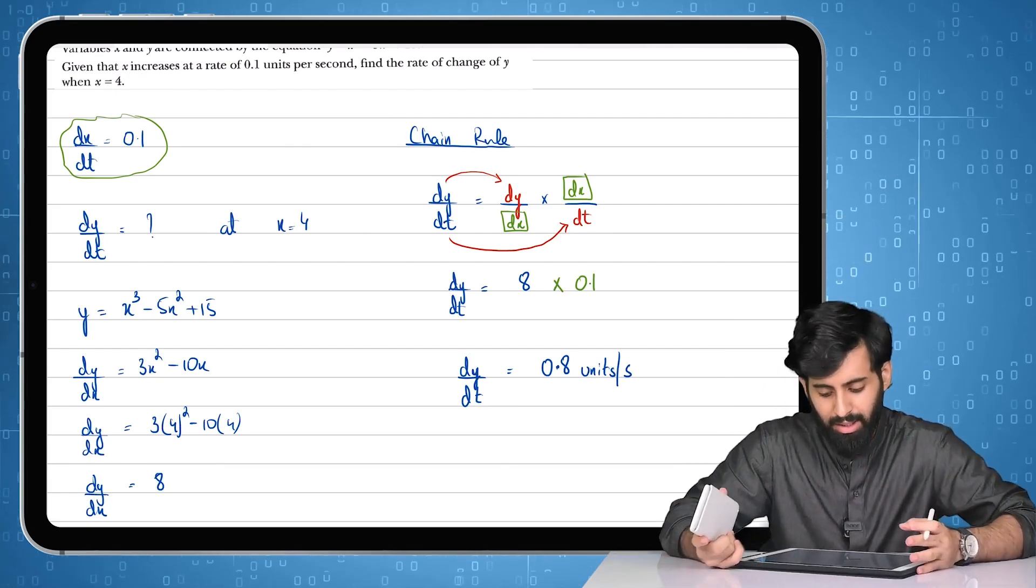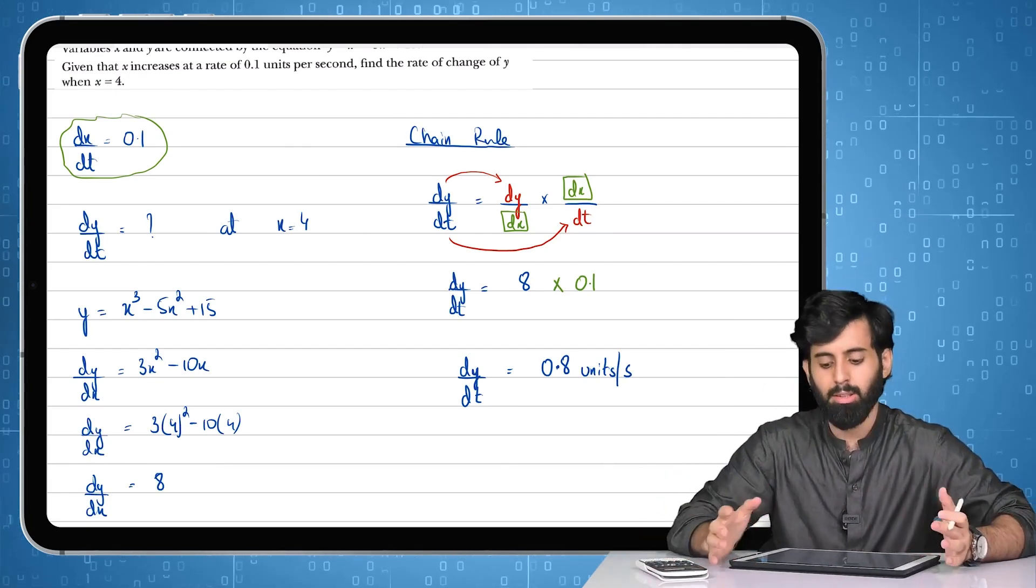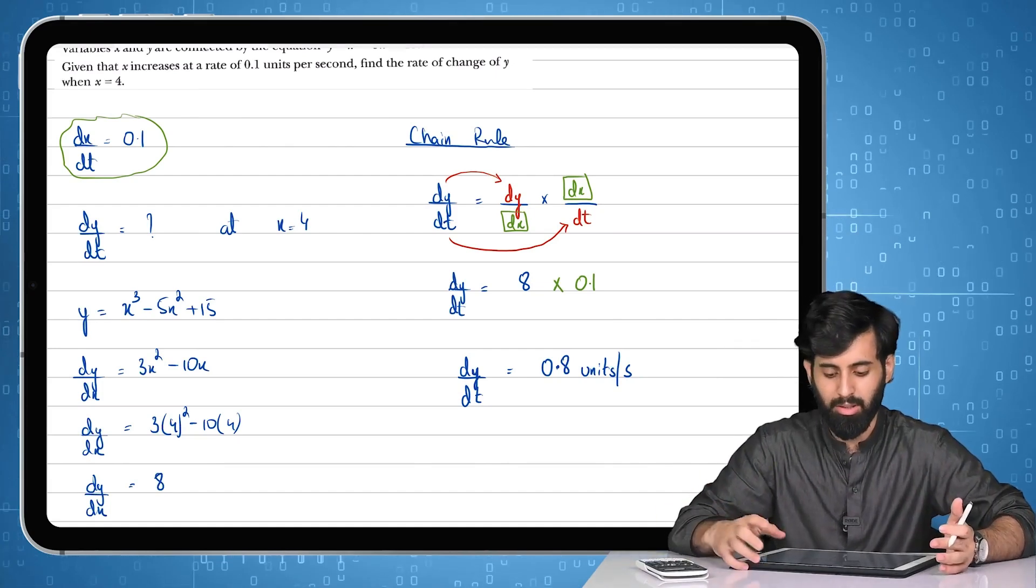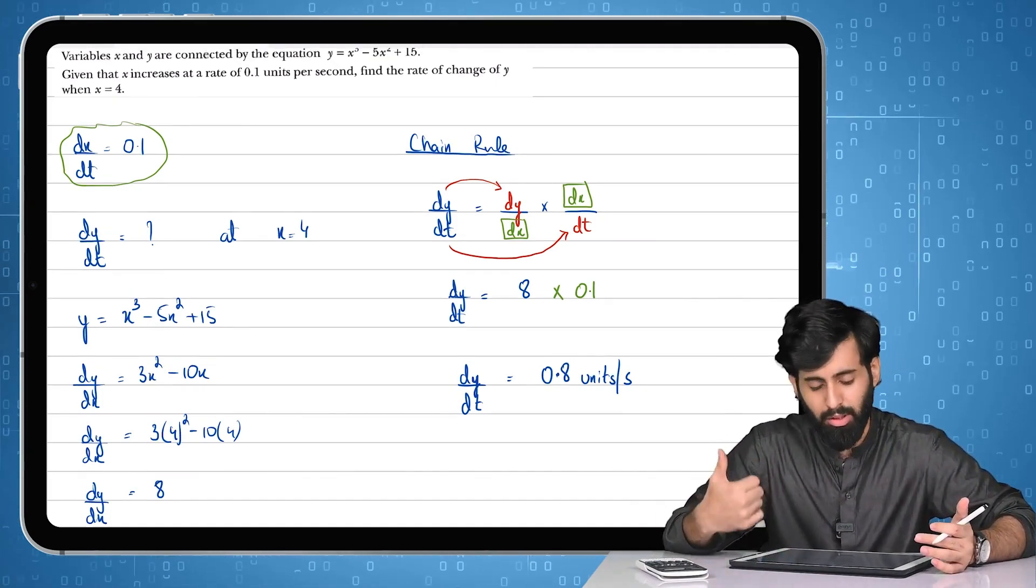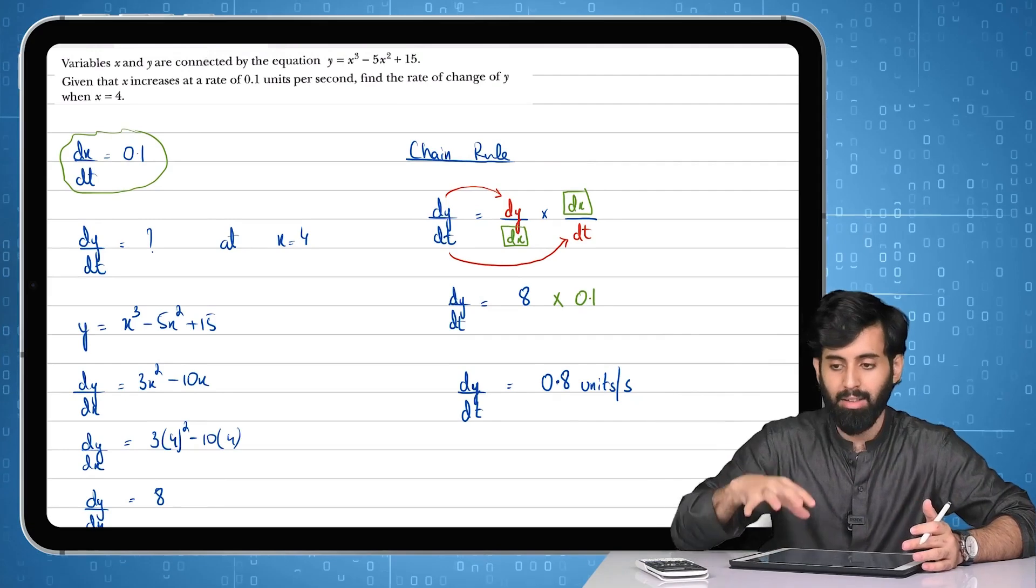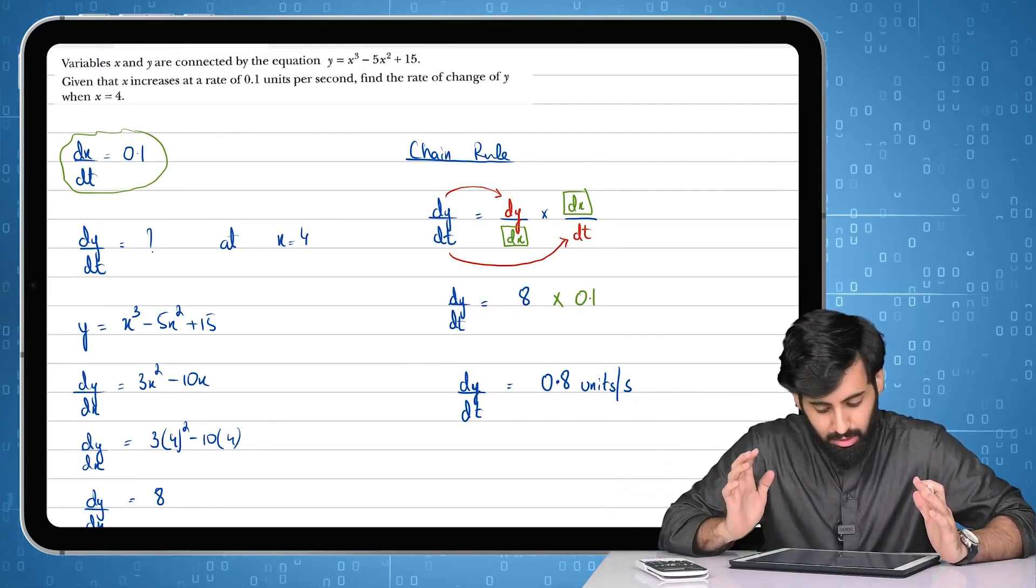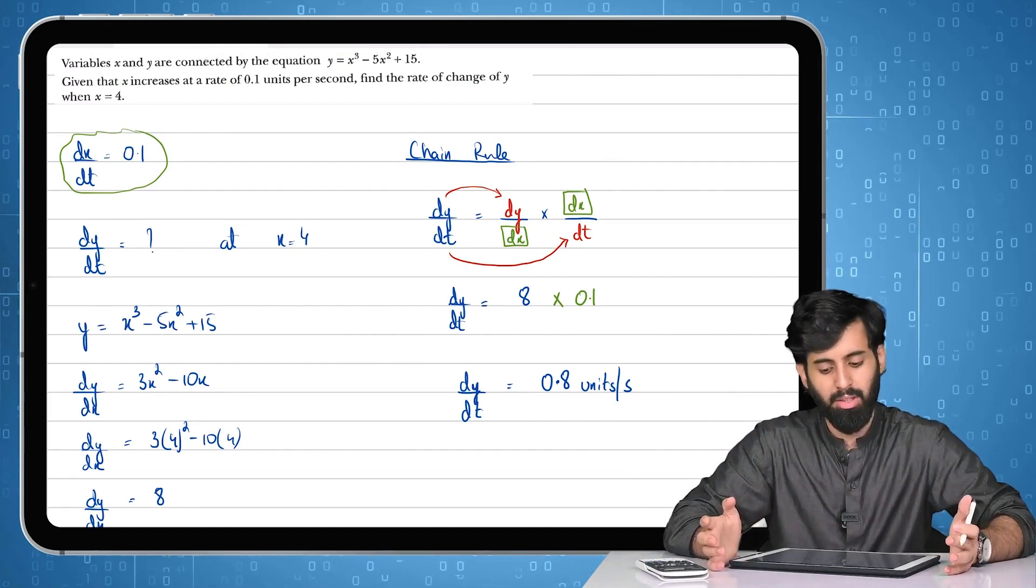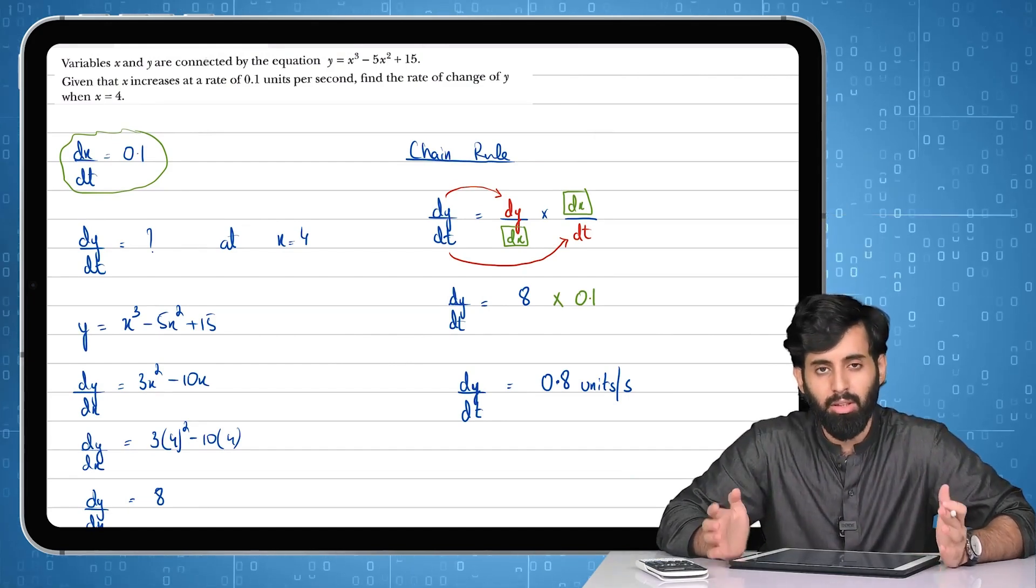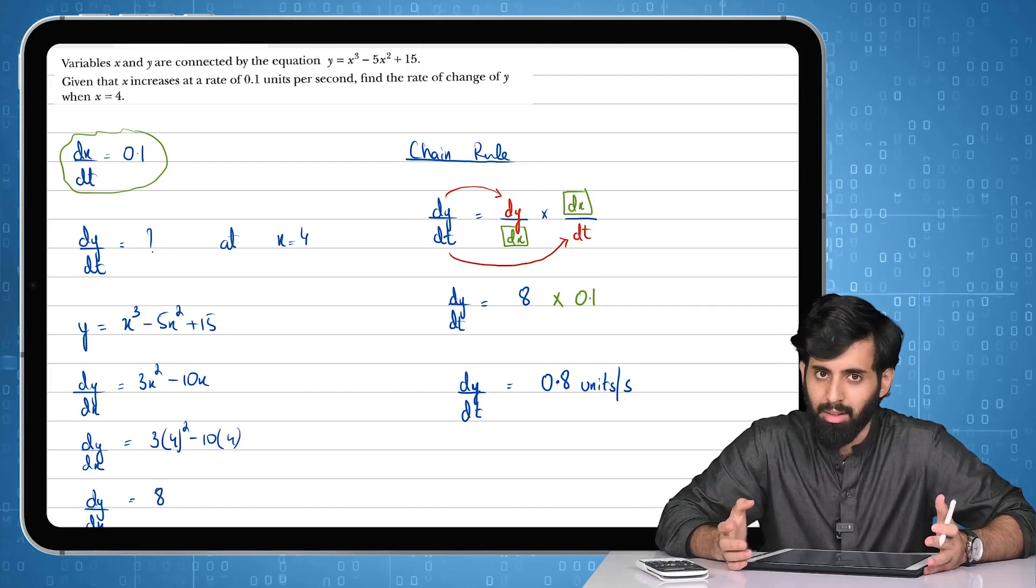So yeah, this is basically how you work out rates of change when there are two variables involved, one being x and the other being y, and they're both changing with respect to time. That's all for this video. This is what I wanted to teach you guys in this video. Hope you guys understood this. See you guys in the next one. Until then, take care. Bye bye.